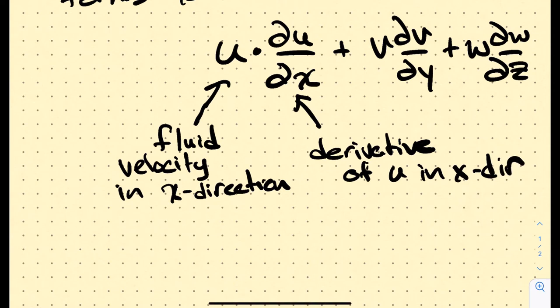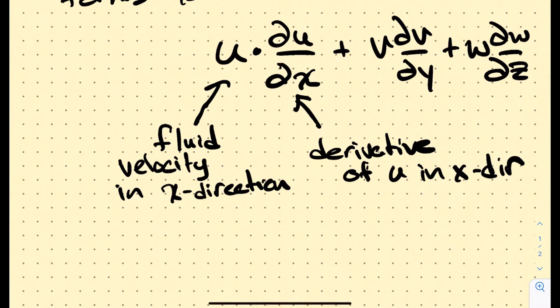Recalling last week, when we were advecting some contaminant, we were concerned with its concentration c. That c was being carried by some advection velocity. Now, this is termed nonlinear advection because it makes our differential equation nonlinear — we have the velocity times the spatial derivative of itself. Any time you multiply a variable times its own derivative, the problem becomes nonlinear.